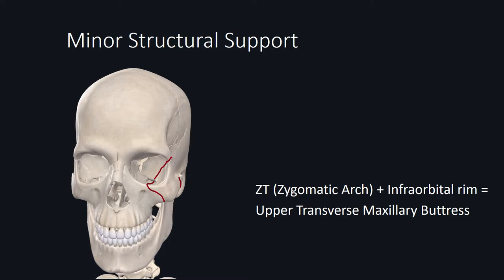Contrastingly, the zygomatic arch and the infraorbital rim consist of a minor support, commonly referred to as the upper transverse maxillary buttress. Restoring structural support along the minor support system is not as crucial as restoring the vertically oriented major support system.